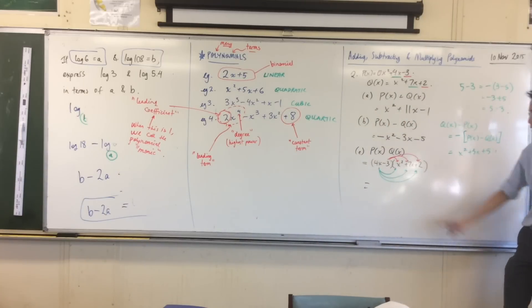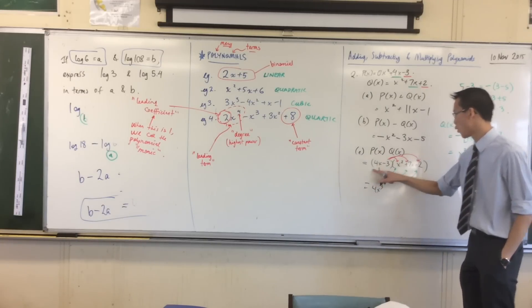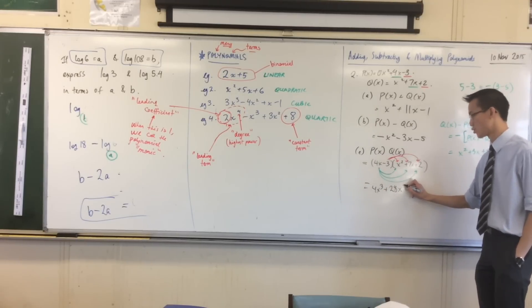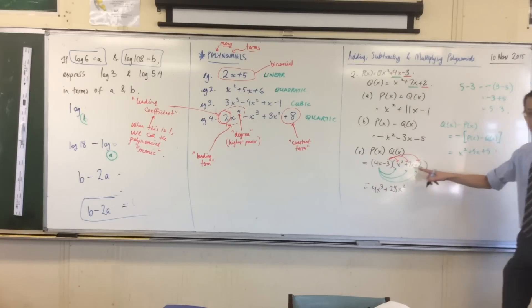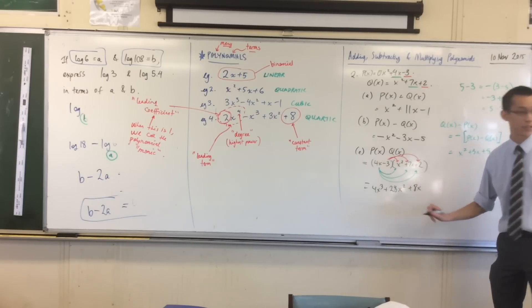We'll do the green ones first, because they're first. So I'm going to do 4x times each one of these in turn. Help me out. 4x times x squared? 4x cubed. 4x times 7x? 28x squared. 4x times 2? That's just 8x. And they're all positive, which is really nice.